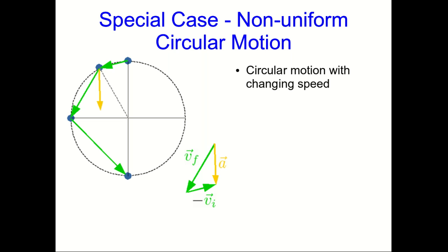And we see that the acceleration vector still points inward, but not directly towards the center of the circle. In this case, because the object is speeding up, as we already know, there has to be a component of the acceleration that points forward.